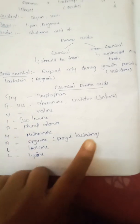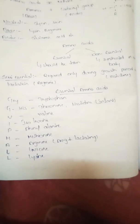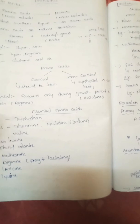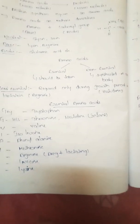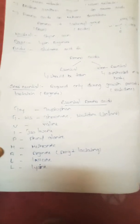Histidine is essential during infancy and the growth period, so it should be included as a compulsory part of the diet. Valine, isoleucine, and leucine are also essential amino acids that are easy to remember.